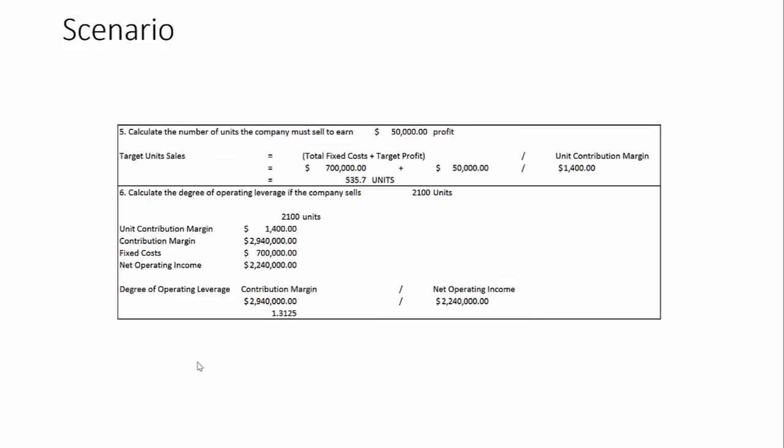Now let's calculate the degree of operating leverage if this company sells 2,100 units. The unit contribution margin is $1,400 (from the $2,000 sales price minus $600 variable unit cost), so the total contribution margin is $1,400 times 2,100 units, giving $2.94 million. We subtract $700,000 in fixed costs to get net operating income of $2.24 million. The degree of operating leverage is $2.94 million divided by $2.24 million, which equals 1.3125.